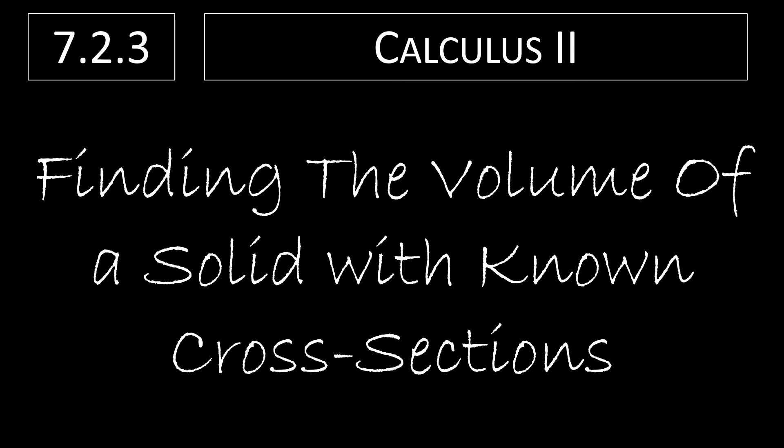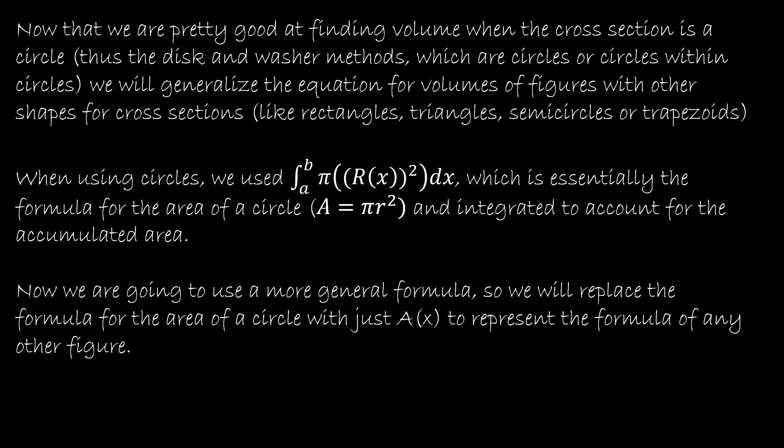In this video, we're going to take a look at how to find the volume of a solid with known cross sections. Instead of taking a rectangle or an odd-shaped figure and rotating it about an axis, we already have a solid three-dimensional figure and we know how to find the cross section — meaning if I cut it down the middle, the cross section would be a square, rectangle, half circle, or circle. When we rotated about the axis, we used this function, and typically pi would be on the outside. But this is really just pi r squared — the formula for the area of a circle.